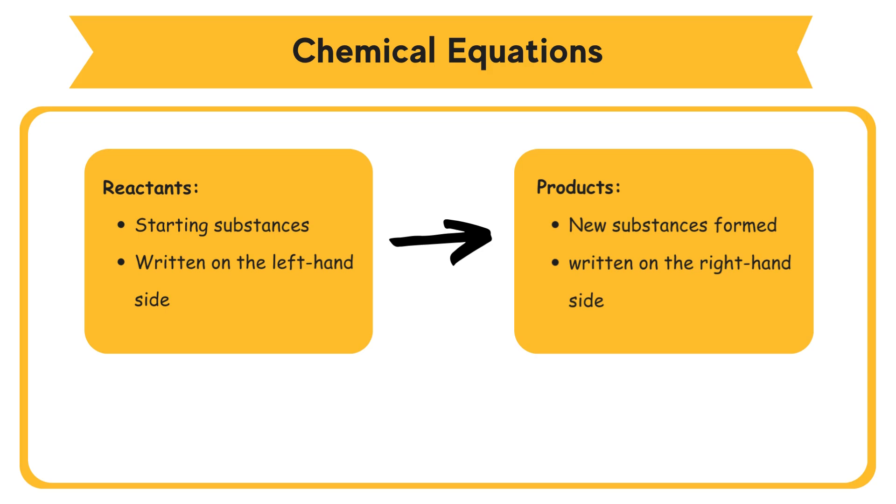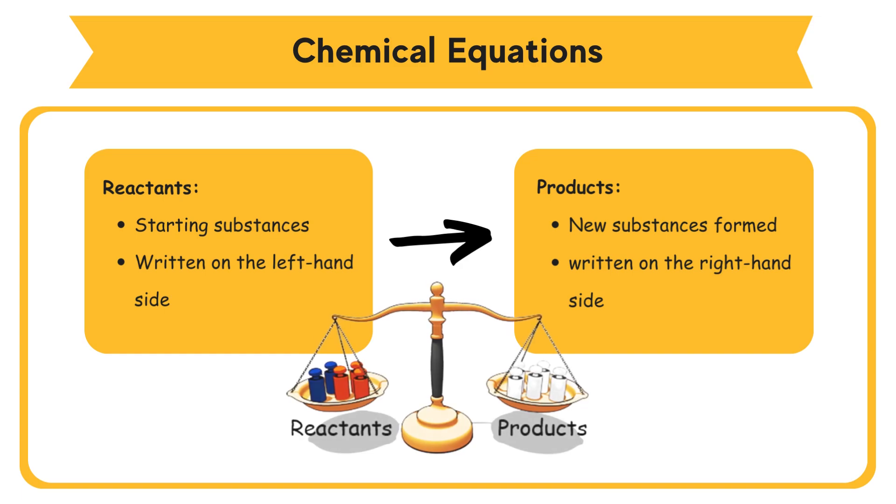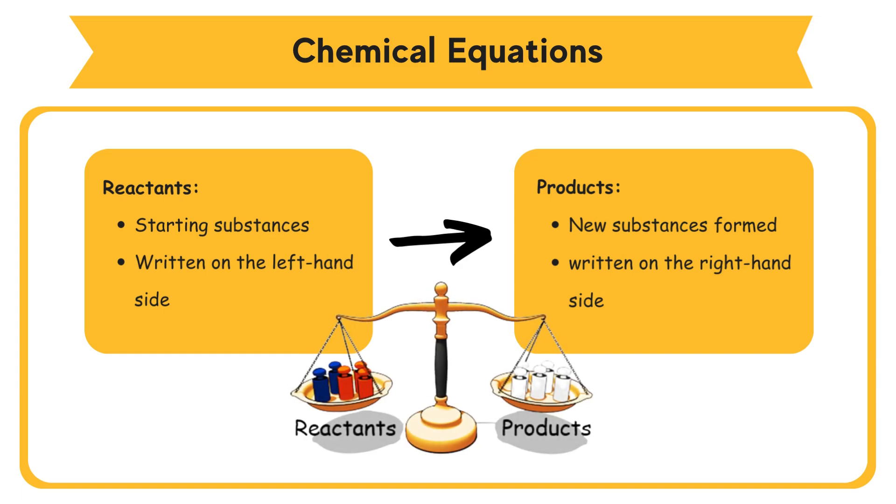According to the law of conservation of mass, matter can neither be created nor destroyed. So, numbers of atoms before and after a chemical reaction are the same. Therefore, a chemical equation must be balanced.